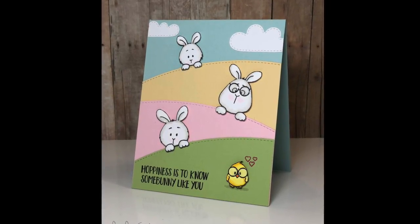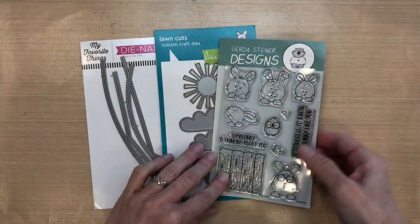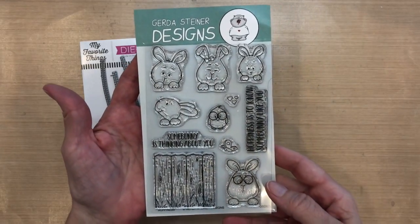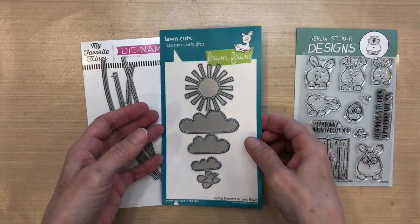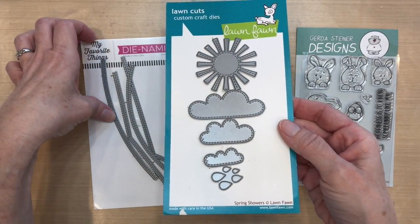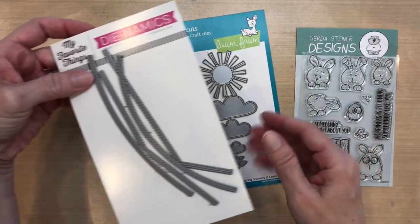Hi everyone, it's Darlene. I'm here today with a pastel card for the March challenge. I'm using this Hoppiness set by Gerda Steiner Designs - it's so incredibly adorable. I have this die set by Lawn Fawn called Spring Showers.